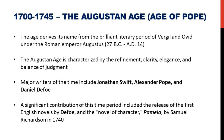The next is the Augustan age, or the Age of Pope, between 1700 and 1745, named after the period in Roman history under Emperor Augustus. During this time, poets strove for refinement, clarity, elegance and balance of judgment in their works. Major writers include Jonathan Swift, Alexander Pope and Daniel Defoe. One of the most significant contributions of this period is the English novel, such as Defoe's Robinson Crusoe, and also the novel of character Pamela written by Samuel Richardson.